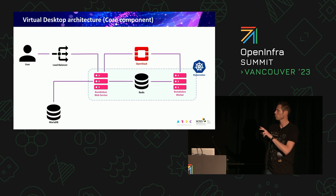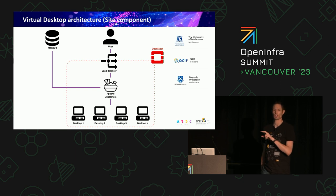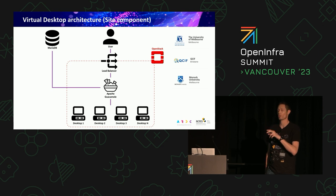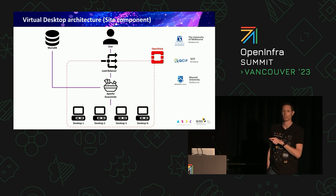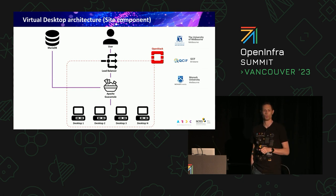This core component runs in our main data centre. Then we've got a site component that we push out to each availability zone. When users have their desktop and are given a Guacamole link, they come in through the load balancer to the Apache Guacamole cluster. There's a shared database between Guacamole and the Bumblebee web service. The part running in OpenStack is provisioned with Heat — we have A and B sets so we can do upgrades or failover without any outages for users.